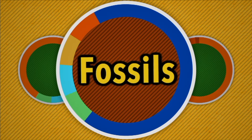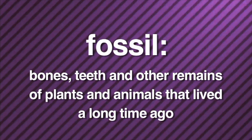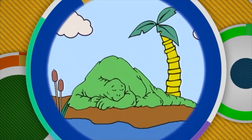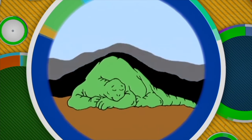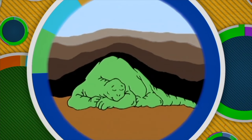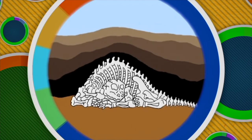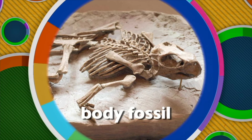Fossils are the bones, teeth, and other remains of plants and animals that lived a long time ago. The first type of fossil we're going to learn about is called a body fossil. Let's say a dinosaur died near a pond or lake. Over the years, sand and mud piled up around the dead dinosaur. The soft body parts like skin, brain, and heart decayed. However, minerals from the ground seeped into the bones and teeth, and eventually the hard parts of the dinosaur's body turned to stone too. That's what a body fossil is.